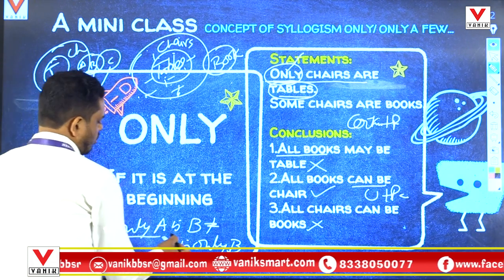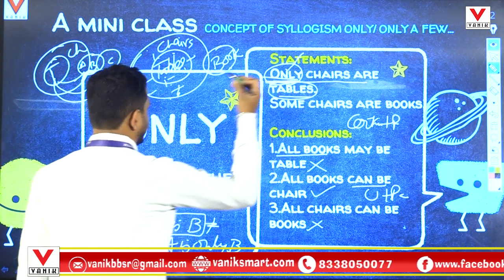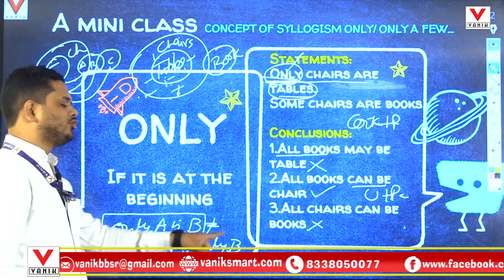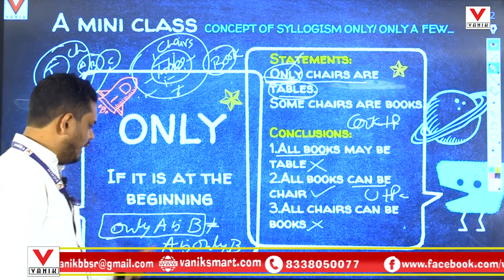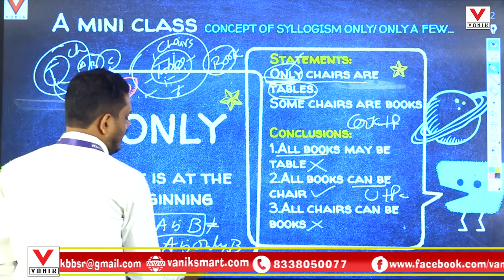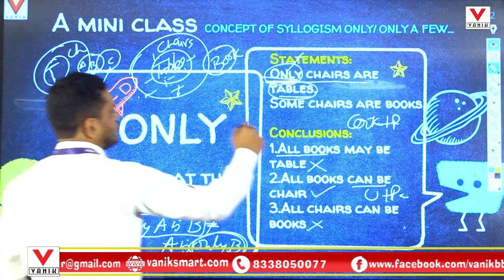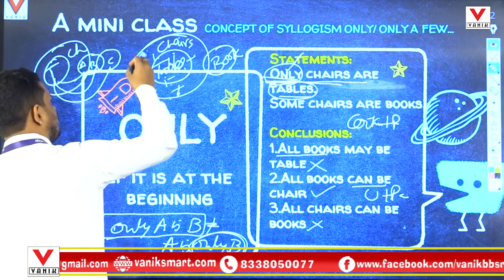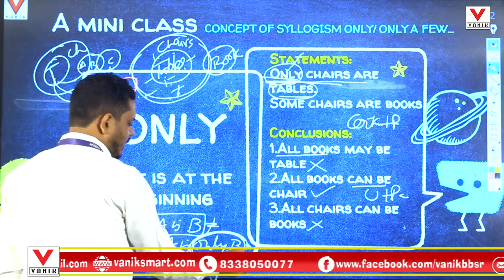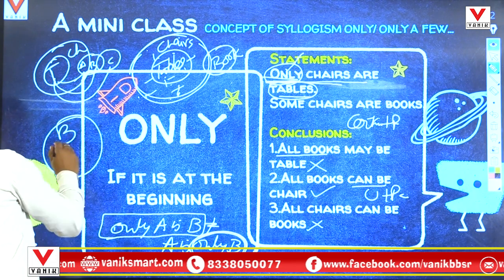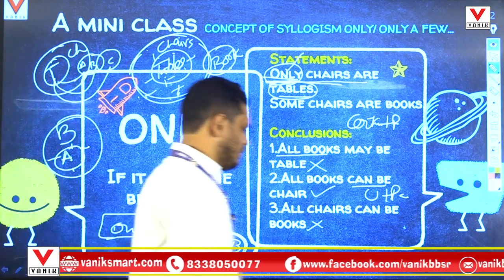We were discussing 'only A is B' because 'only' was given in the first part of the sentence. Now if I say 'A is only B,' what does it mean? 'Only' always describes the content of the outer side. In 'only chairs are tables,' chairs becomes the outer part. In 'A is only B,' B should be the outer part. The inner part should be A, and A becomes negative with all other items.